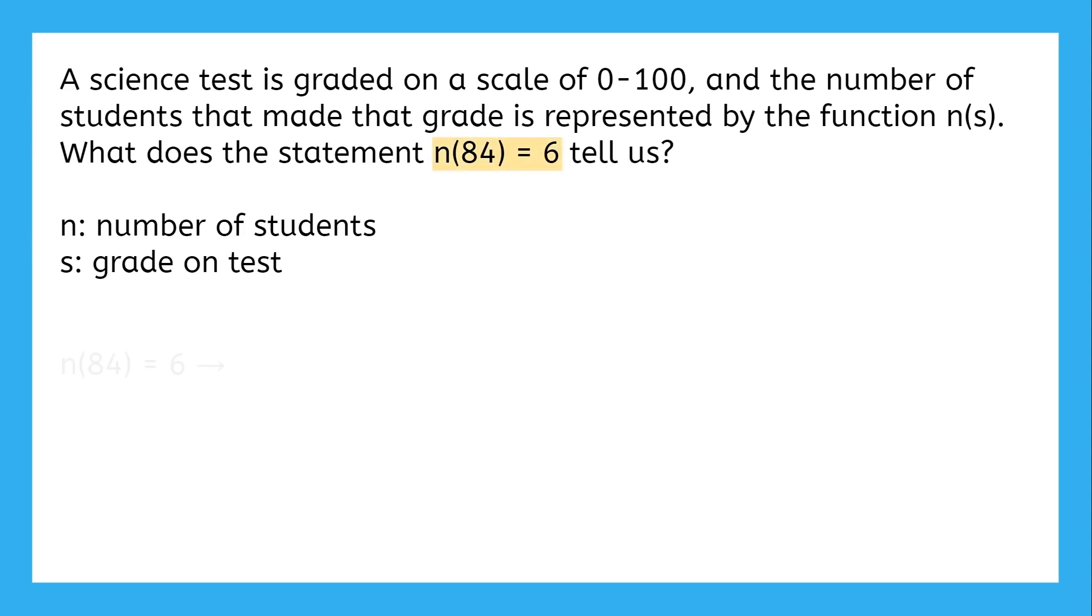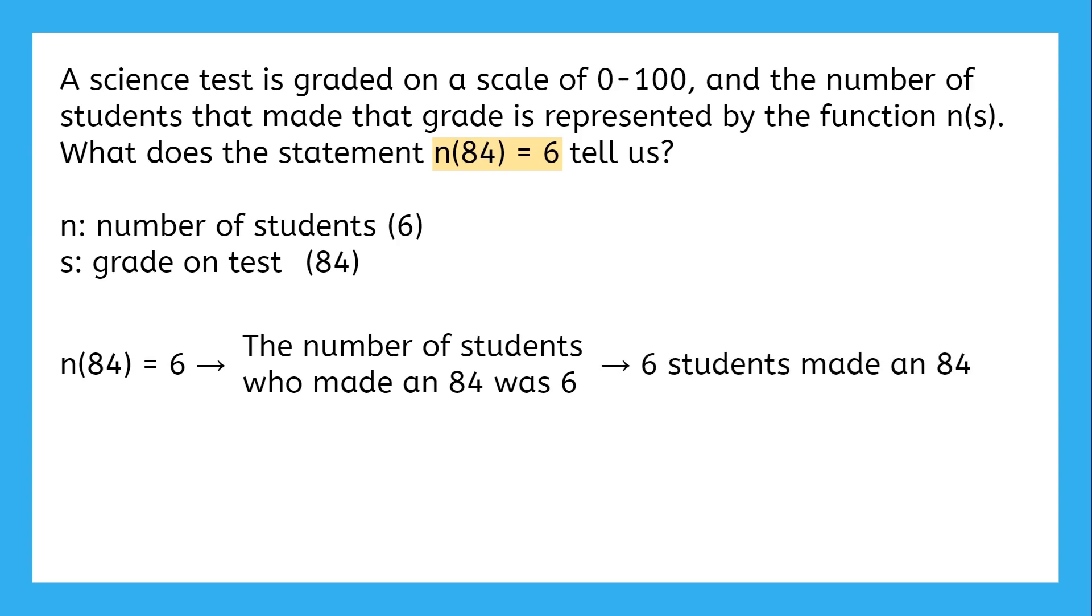Now we're ready to understand what n of 84 equals 6 means. The s here is 84, so that's the grade we're focused on. n of 84 means the number of students that made an 84, and that number is 6. So altogether, this statement says the number of students who made an 84 was 6, or to put it in a more natural way, 6 students got an 84 on the test.